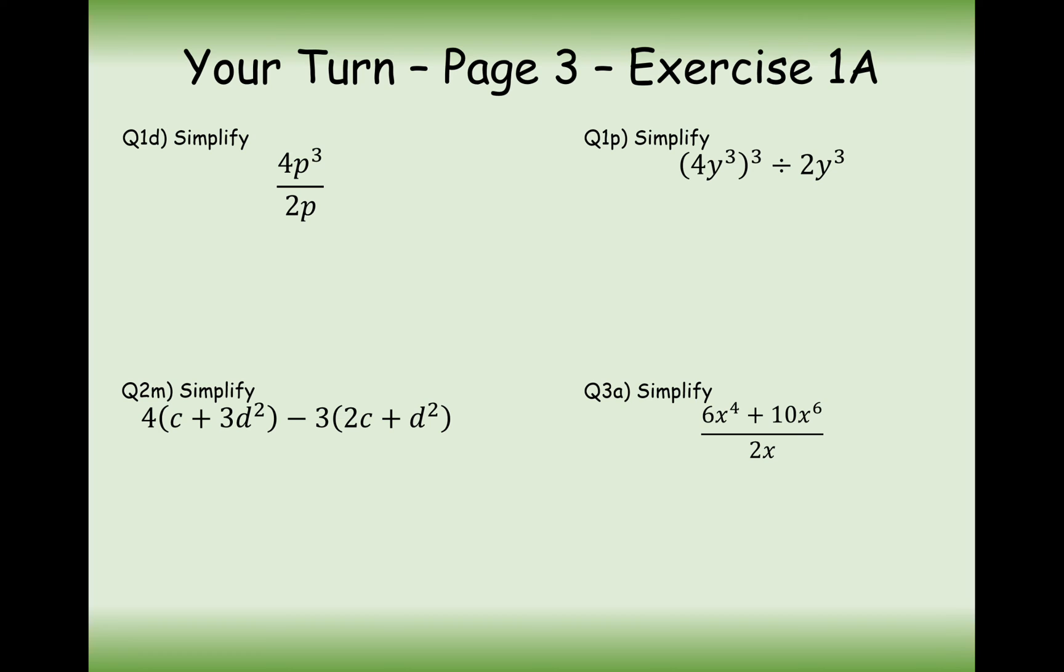So hopefully you've had a go at answering these questions here. Let's go through them together. So the first thing you would do with this one is cancel out the 4 and the 2. So do 4 divided by 2. And you get 2. And then you use the subtraction rule to cancel out these algebraic terms here. So 3 take away 1 is 2. So the answer here is 2p squared.